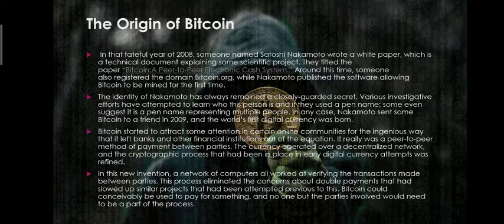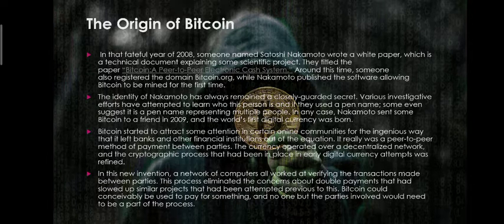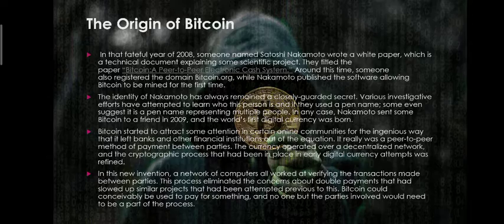Various innovative attempts have been made to learn who this person is and whether they used a pen name. Some even suggest it is a pen name representing multiple people. In any case, Nakamoto sent some Bitcoin to a friend in 2009, and the world's first digital currency was born.